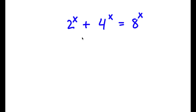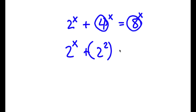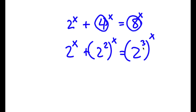In this problem, I have 2 to the power of x plus 4 to the power of x is equal to 8 to the power of x. I'm going to start by rewriting 4 as 2 squared and 8 as 2 to the power of 3. So now I have 2 to the power of x plus 2 squared to the power of x is equal to 2 to the power of 3 to the power of x.